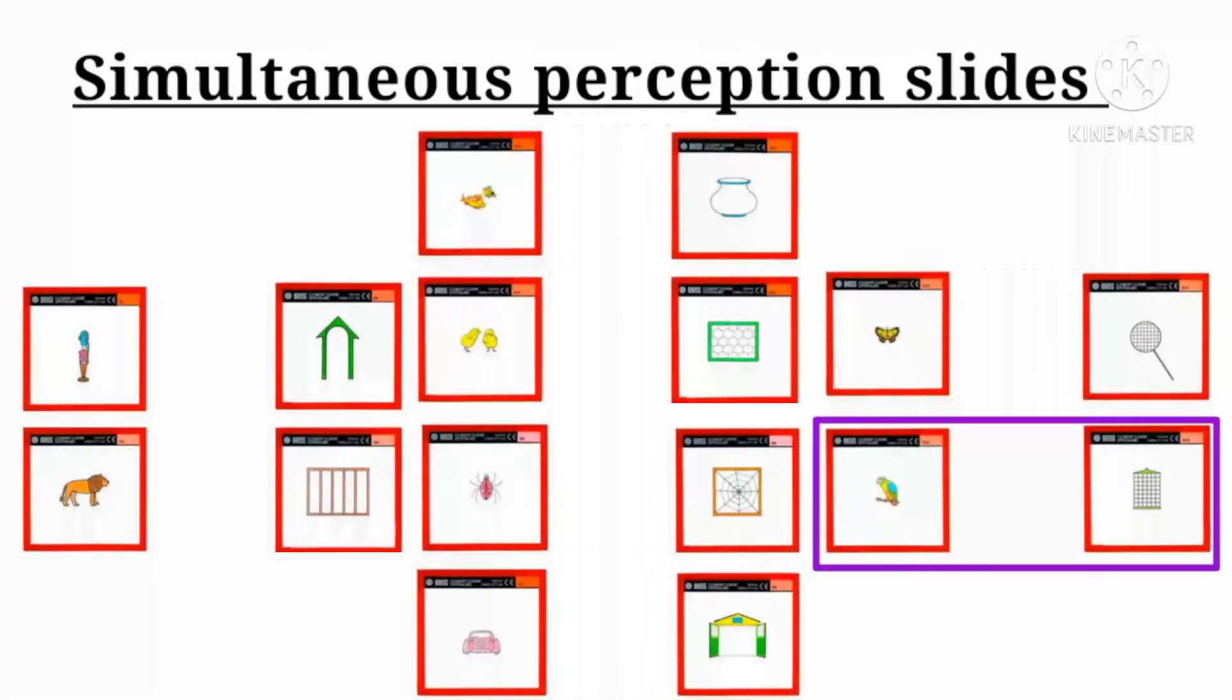Similarly, one parrot in one slide and cage in the other slide, or one spider in one slide and spider web in the other. If the patient has simultaneous perception, these two different slides will be overlapped. Like lion in the cage, parrot in the cage and spider on the web.